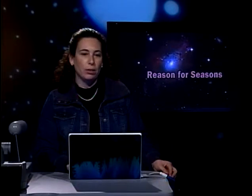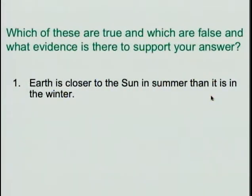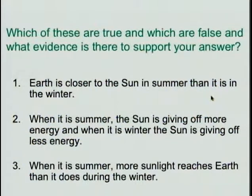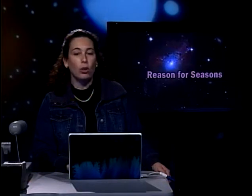I have a little test for you to make sure you got this. Which of these are true and which are false, and what evidence supports your answer? First: Earth is closer to the Sun in summer than in winter. Second: in summer the Sun gives off more energy, and in winter less. Third: in summer, more sunlight reaches Earth than during winter. Take a minute to think about it — you may want to pause — then come back.